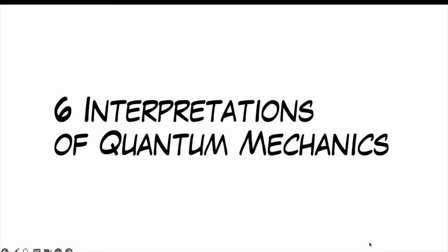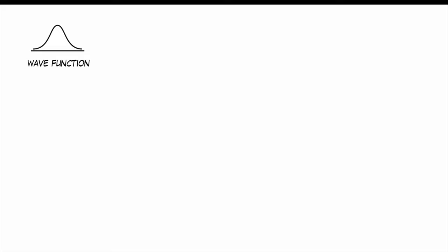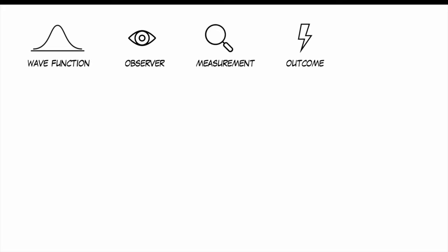Now let's go to the comic strips. To simplify matters, we will have four icons to represent the concepts we're using. We will depict the wave function as a simple bell curve. We will use an eye to signify the observer, a magnifying glass to signify the act of measurement, and a lightning symbol to signify the outcome of such a measurement.